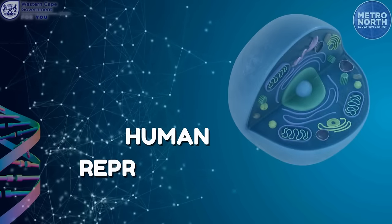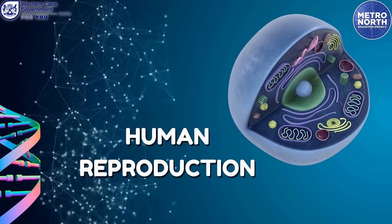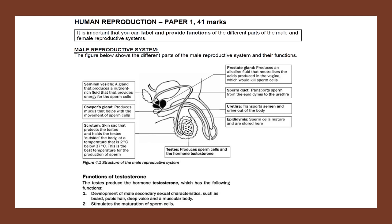Our first topic is Human Reproduction. Human Reproduction will be part of Paper 1 and will make up 41 marks out of your 150 marks. It is important that you can label and provide functions of the different parts of the male and the female reproductive system. There is a very good diagram that gives you the structure of the male reproductive system as well as the function. Please make sure that you know each part of the male reproductive system and its corresponding function. Also ensure that you know the functions of the hormone testosterone.